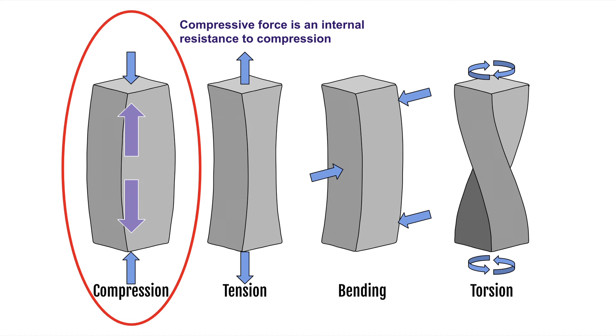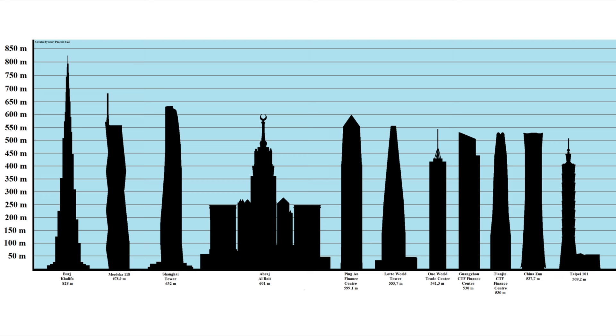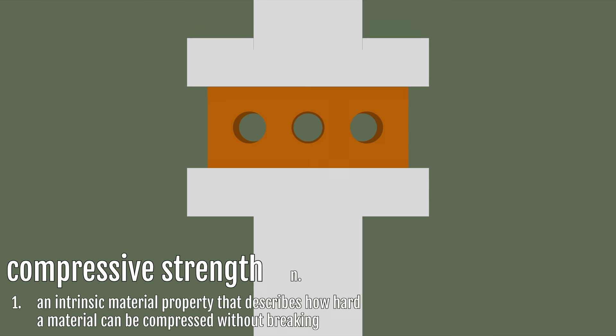Traditional rigid structures rely on compressive forces to balance the force of gravity. This puts a limit on the size of rigid structures due to the limitations of available materials. These limitations can be expressed as compressive strength. This is an intrinsic material property that describes how hard a material can be compressed without breaking.